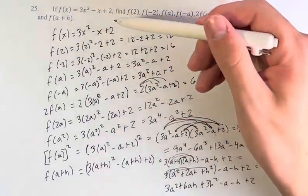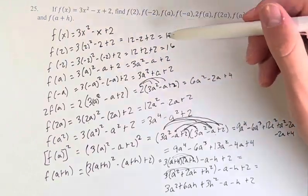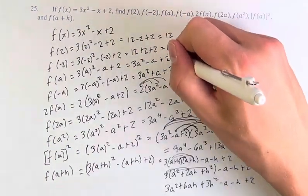So now you can see we're doing all of these. We just have to plug in whatever it is instead of x, and then we do our simplifications, and we get all of these answers.